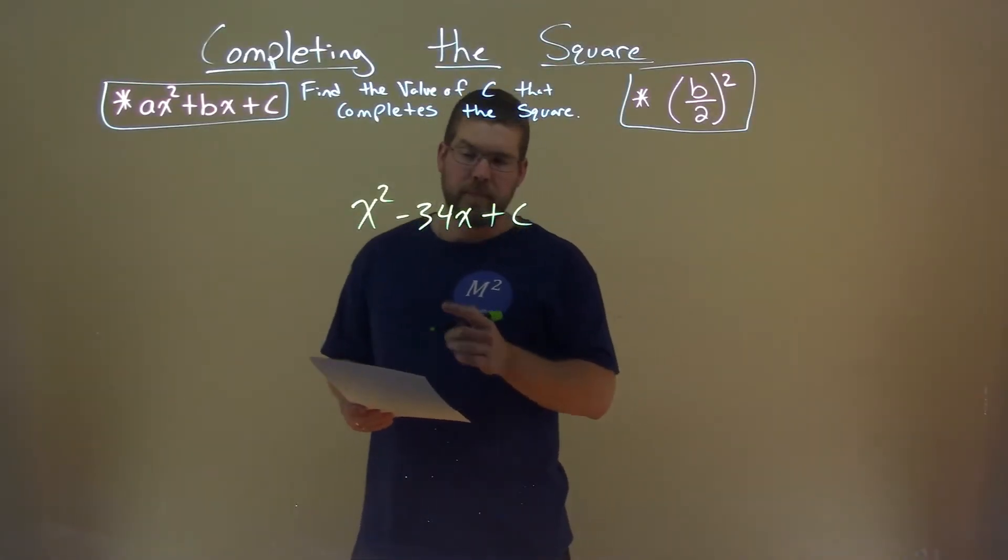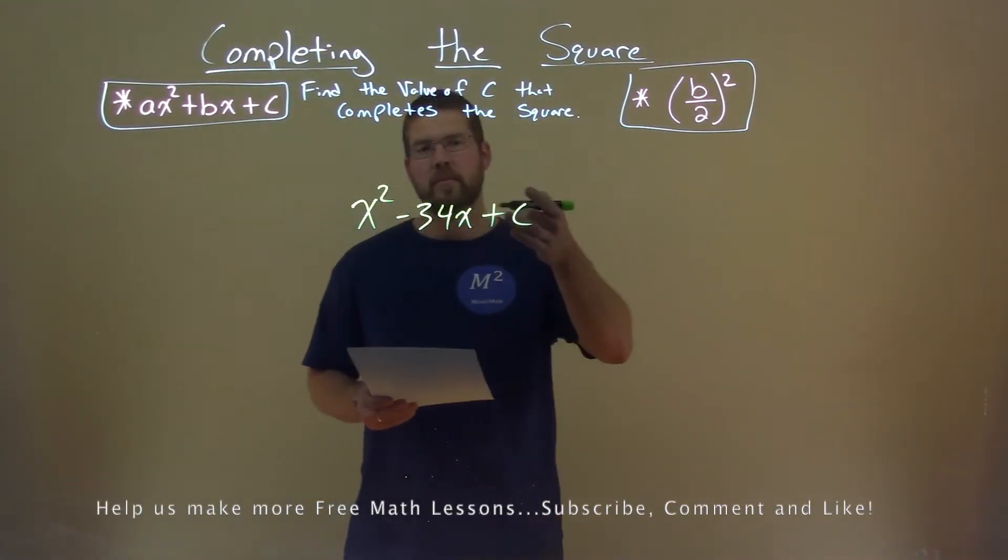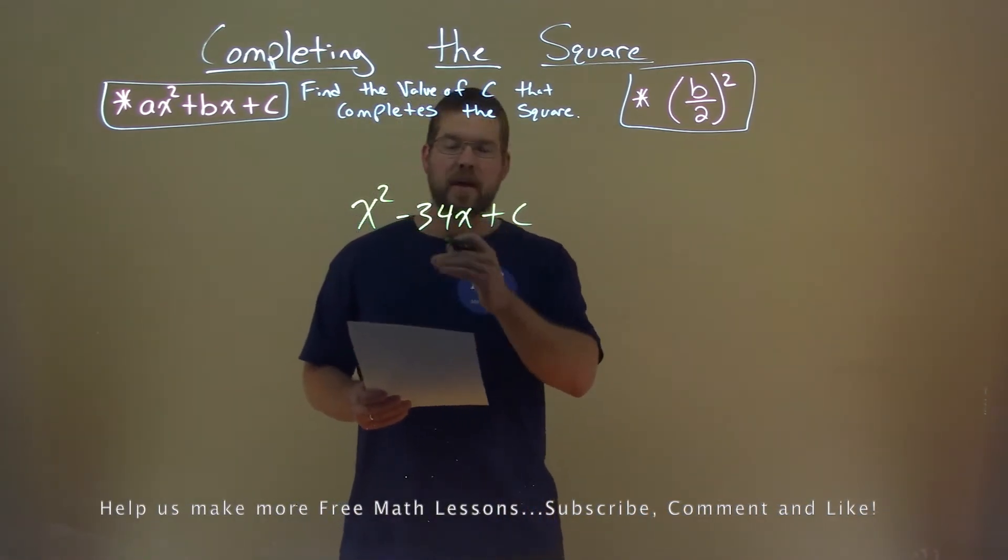We're given this problem right here: x squared minus 34x plus c, and we want to find the value of c that completes the square.